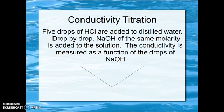Five drops of maybe one molar hydrochloric acid are added to a volume of distilled water with a conductivity probe inside the water, and sodium hydroxide is drop by drop added. The sodium hydroxide being the same molarity, one drop of NaOH will neutralize one drop of HCl. We measure the conductivity as a function of the number of drops of NaOH.